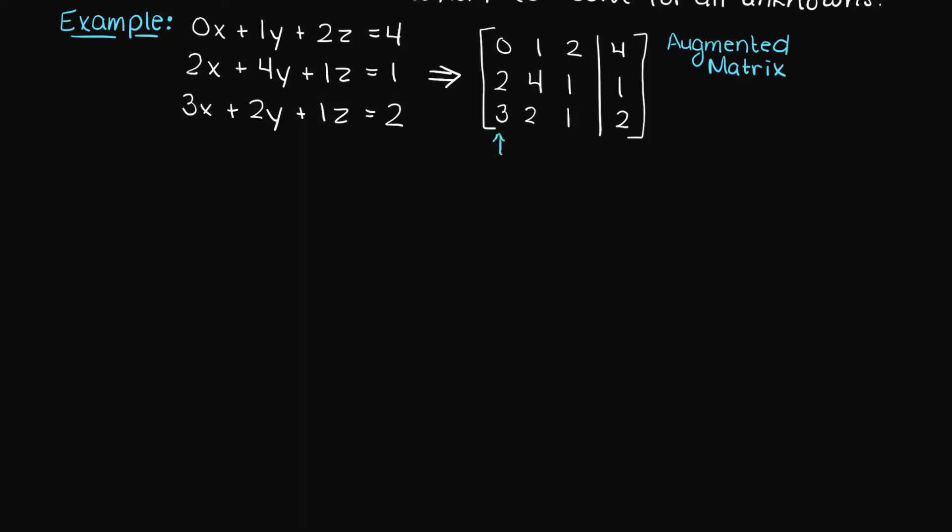The first column of the newly formed matrix is our x variable. The second column is y, and the third column is z. The fourth and final column is simply the constant vector, which is the scalar value that each linear equation is equal to.